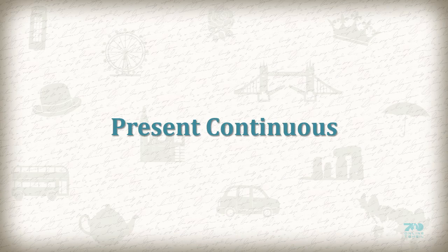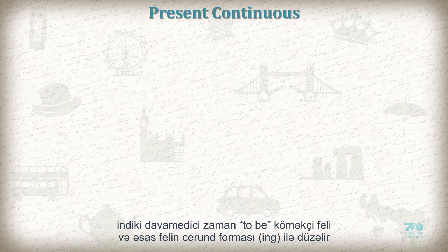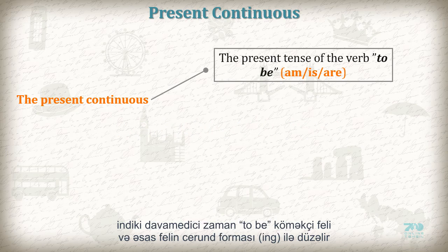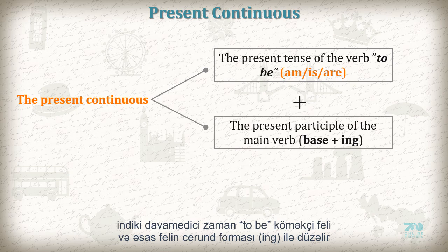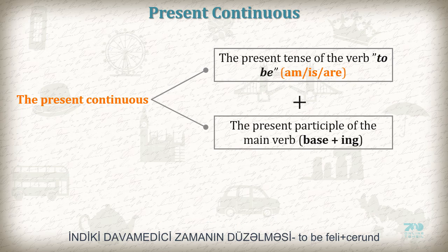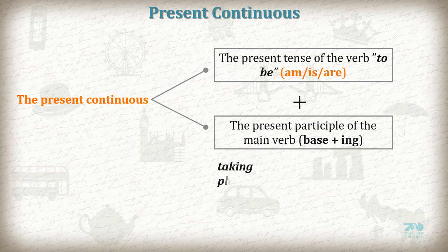Present Continuous. Forming the Present Continuous: the present continuous of any verb is composed of two parts — the present tense of the verb 'to be' plus the present participle of the main verb. The form of the present participle is base plus -ing. For example: taking, playing, moving, smiling.